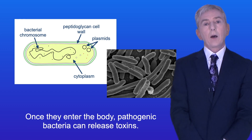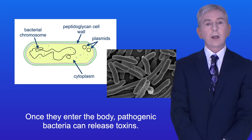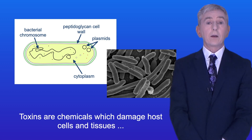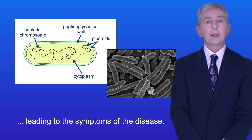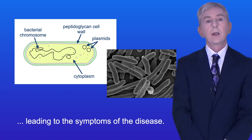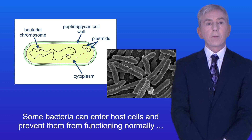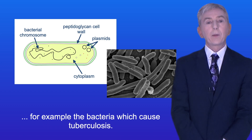Once they enter the body, pathogenic bacteria can release toxins. Toxins are chemicals which damage host cells and tissues, leading to the symptoms of the disease. Some bacteria can enter host cells and prevent them from functioning normally, for example the bacteria which cause tuberculosis.